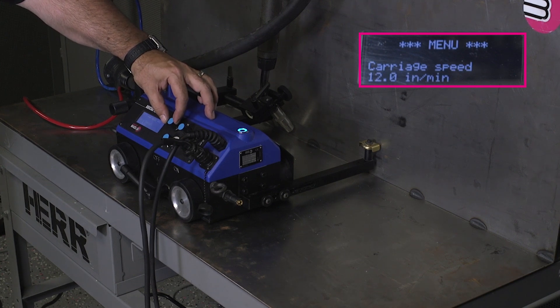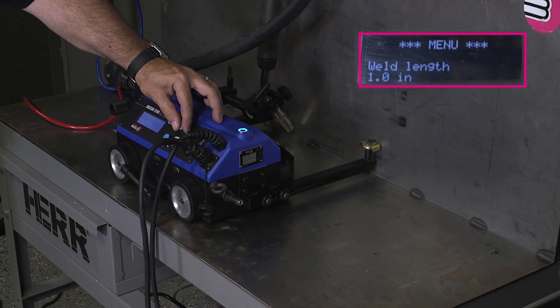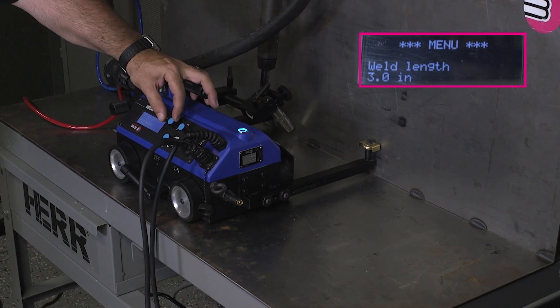Rotate that down to the second one. We're going to see the weld length in inches. We want to move that to three inches because our application is going to be a three on nine inch center.